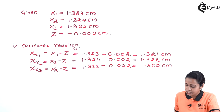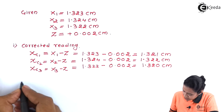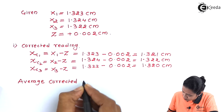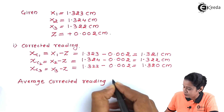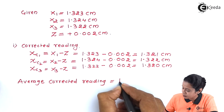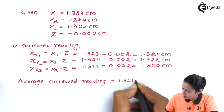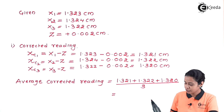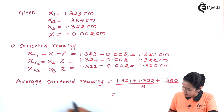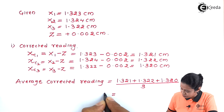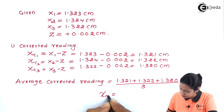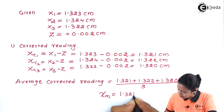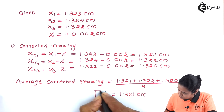Now we have to take the average corrected reading, as asked in our question. It is the same as taking the average of any numbers — we add up all values and divide by 3. The mean average reading Xm comes out to 1.321 cm. This is our first answer.